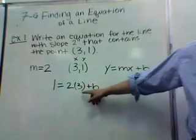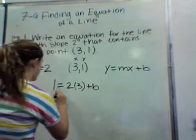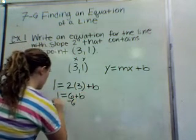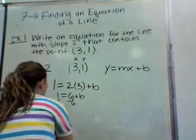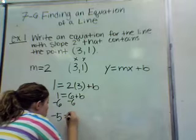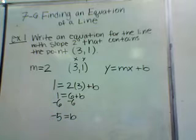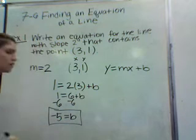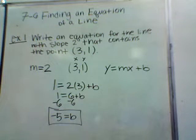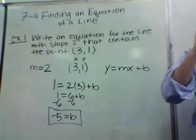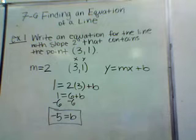Now we keep solving: 1 equals 6 plus b. We subtract 6 on both sides and you get b equals negative 5. Does everybody remember what b stands for? B stands for the y-intercept — that's what it is. Good job, you're on your way.